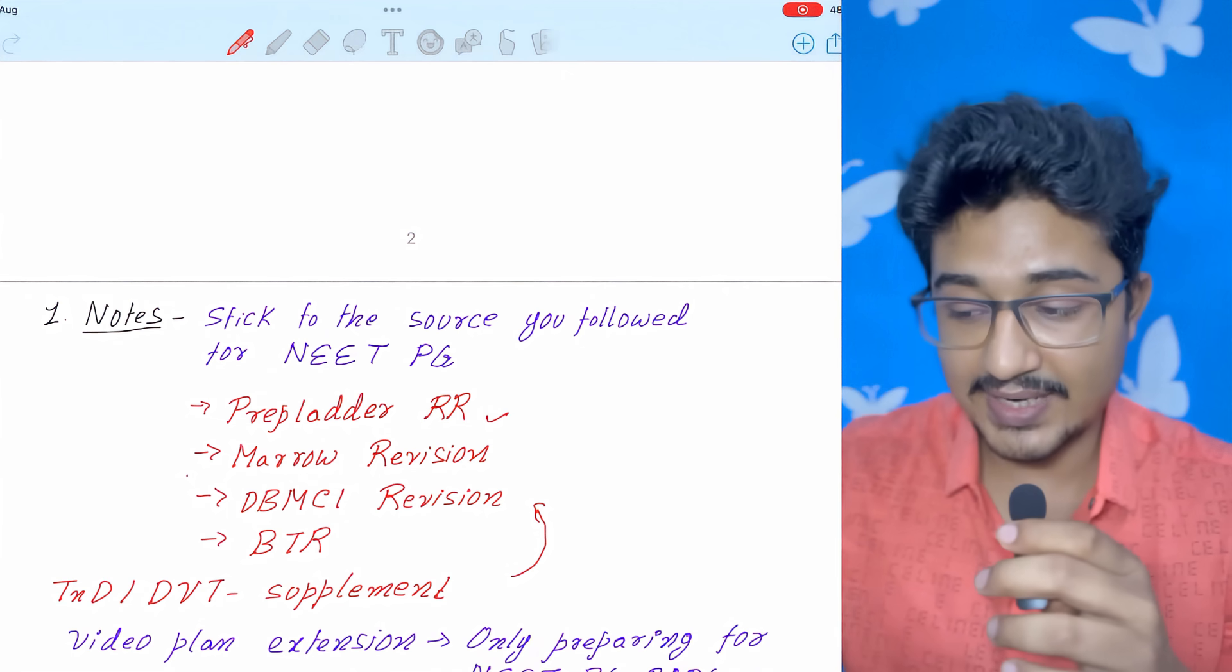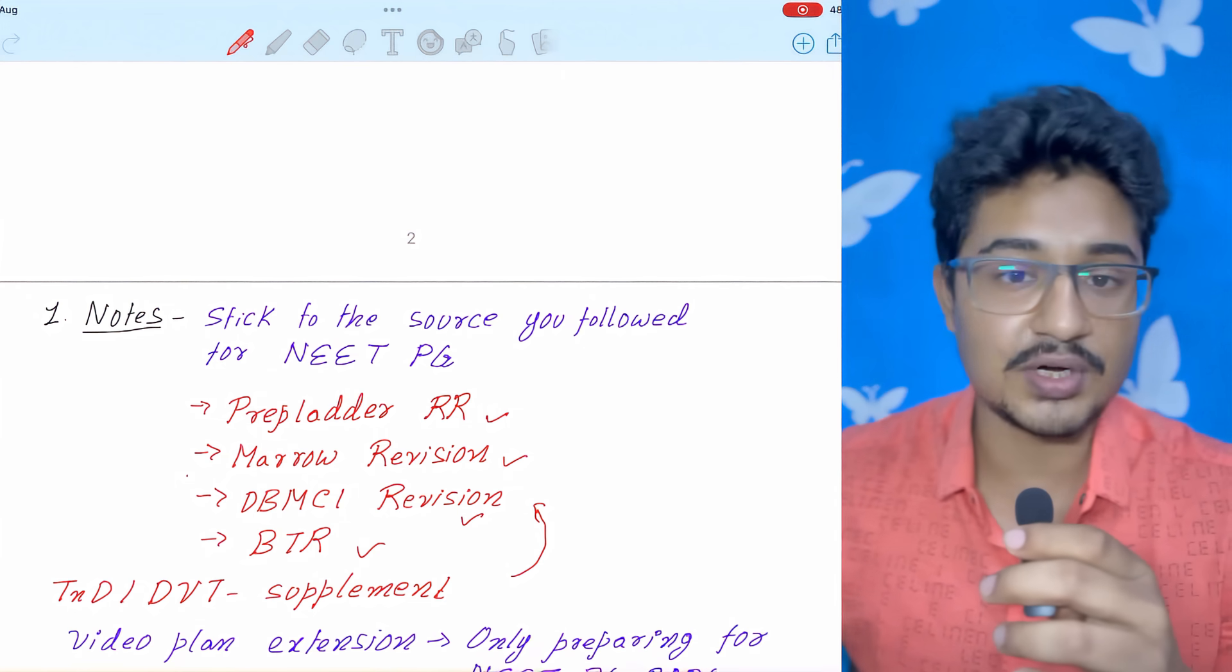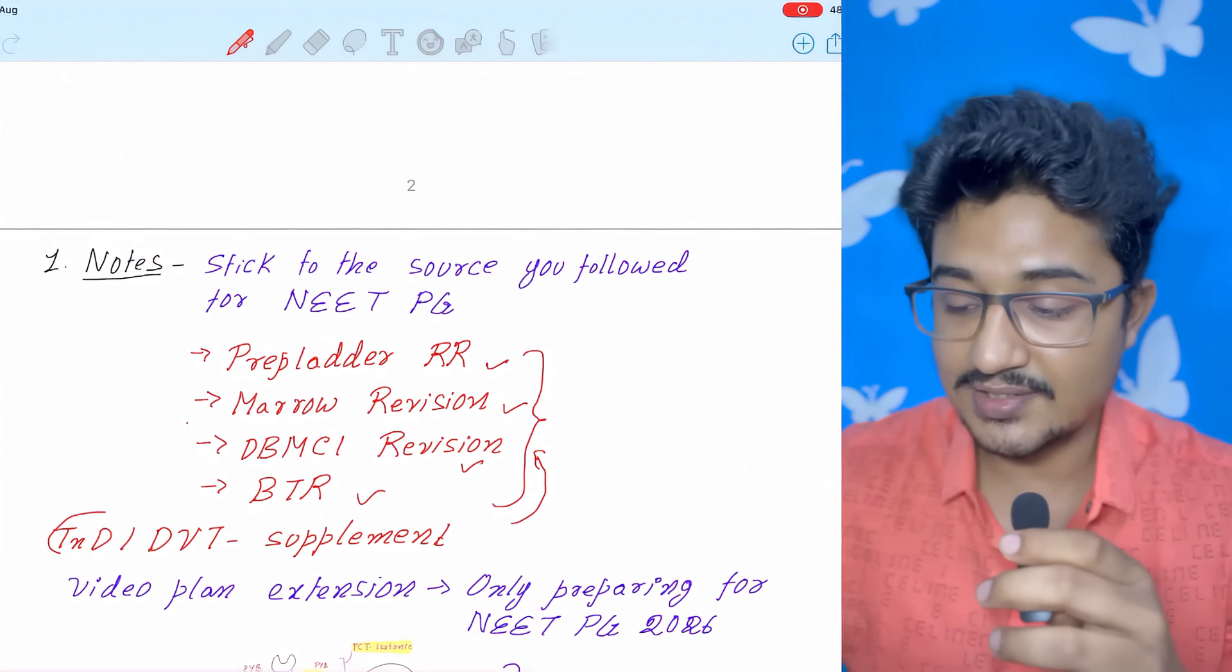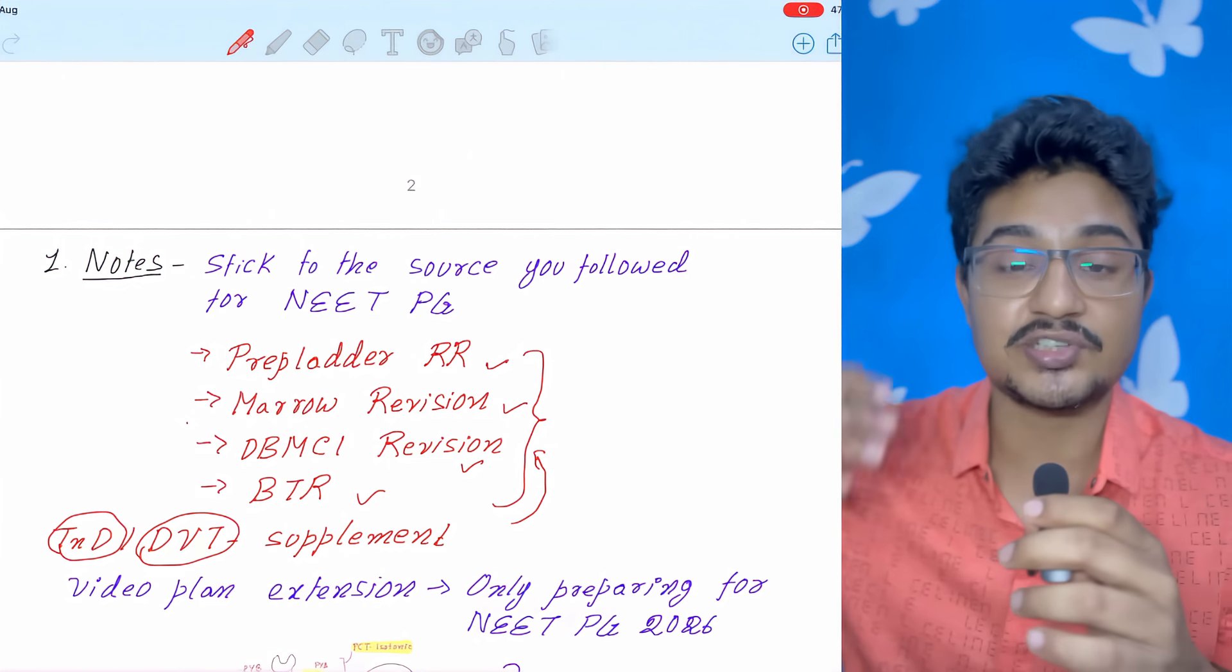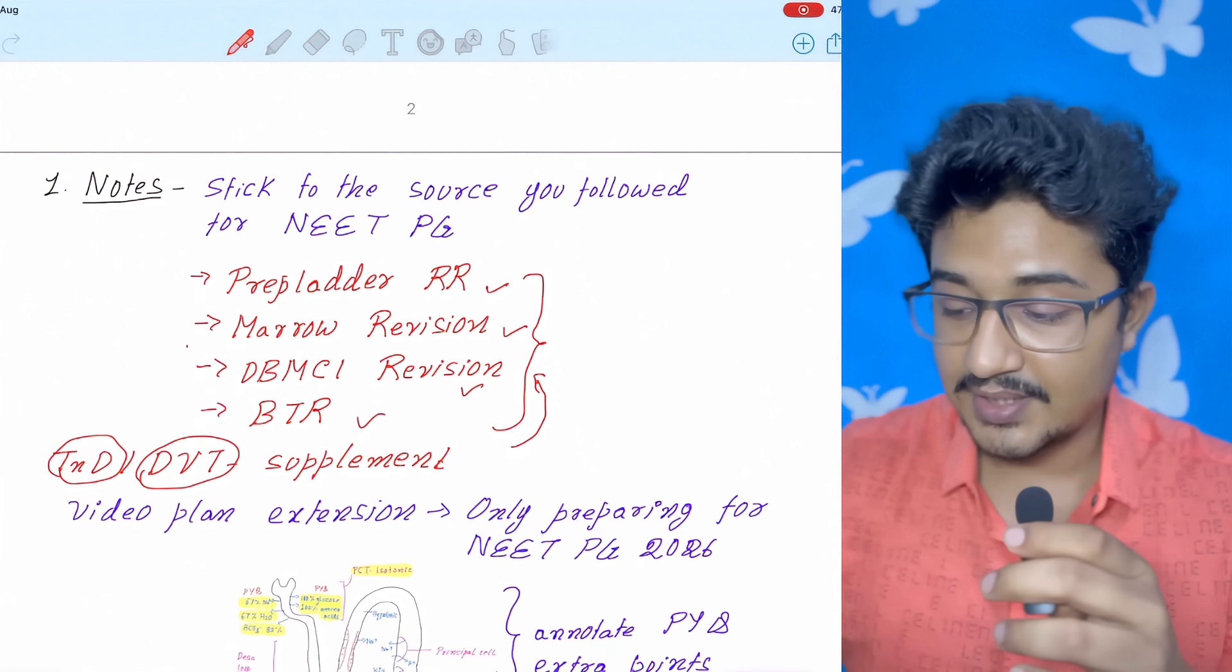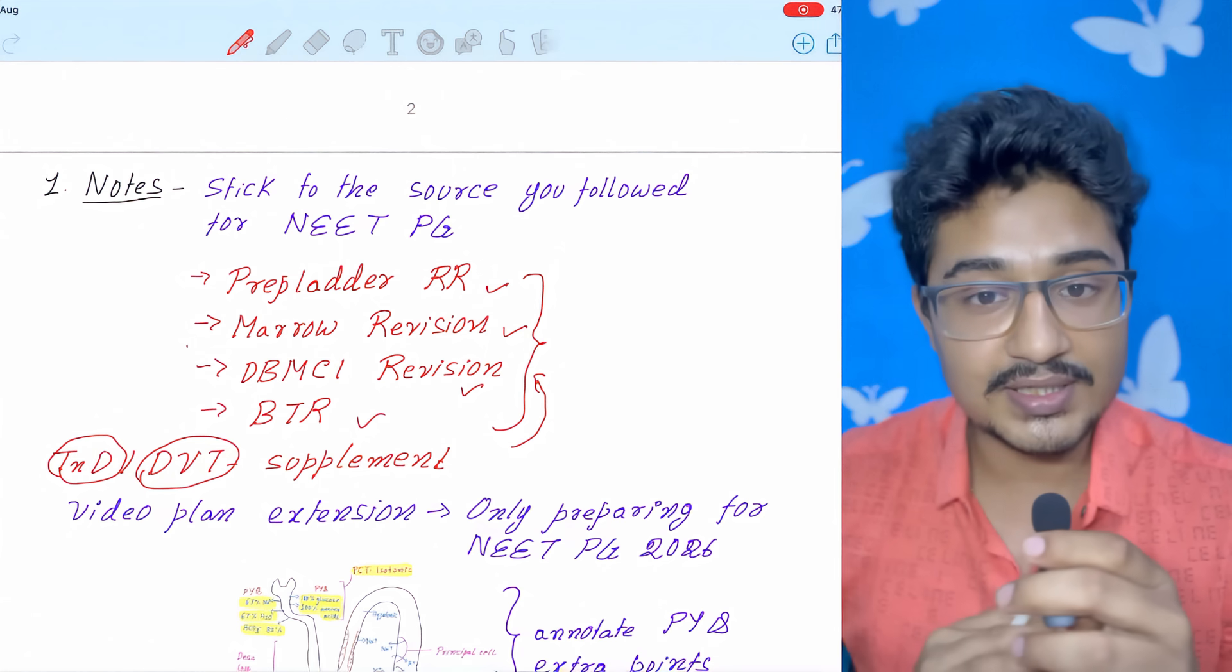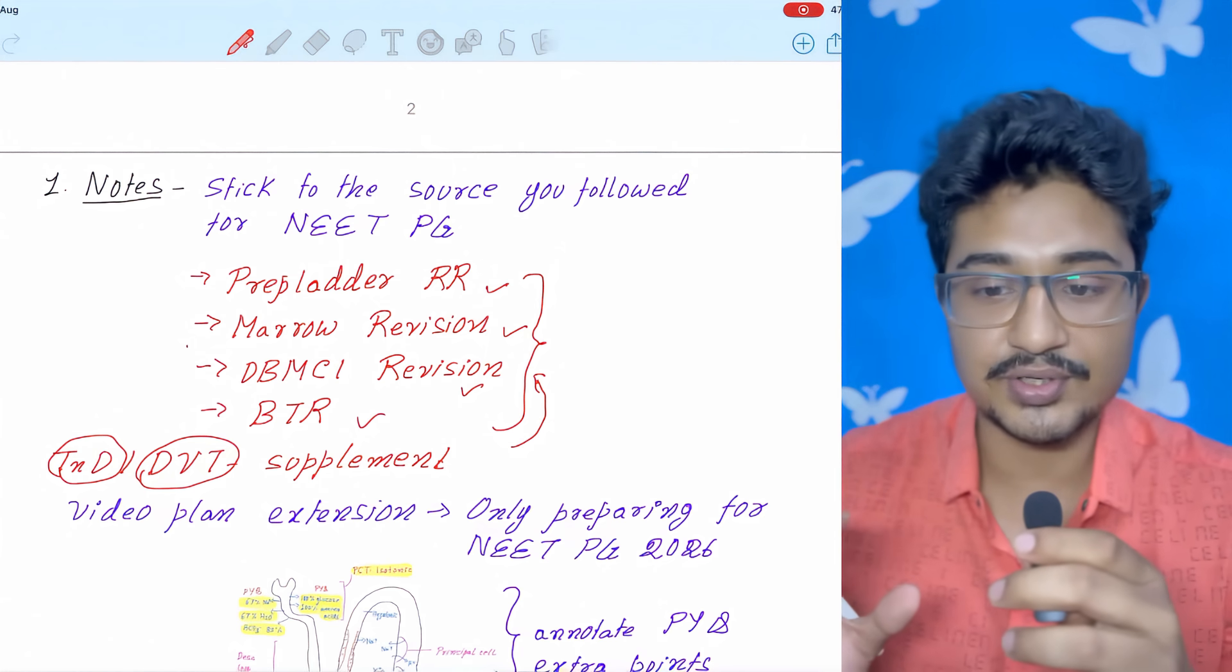So you can do prep ladder rapid revision, marrow revision, DB MCI revision or BTR. It is also a good source. TND or DVT you can use as a supplement to this revision sources. As a sole source, TND and DVT does not have that much high strike rate of maybe 80% or 70%. If you are planning for NEET PG 2026, then only you go for the extension of your video plan or else for this INICT, no need to extend your video plan. Just focus on your notes.